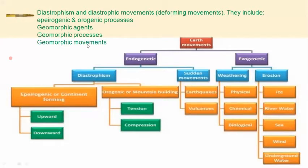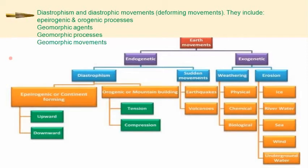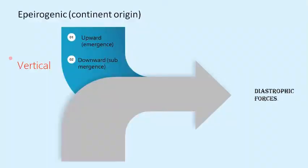The last term is geomorphic movements. These are large-scale physical and chemical changes that take place on the earth's surface — for example, folded mountains, or the various tectonic plates moving. Geomorphic movement is not on a small scale; it is on a large scale.